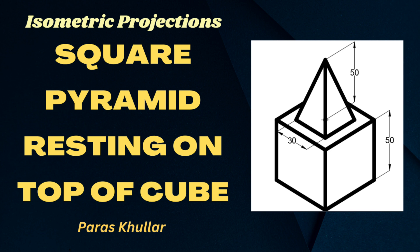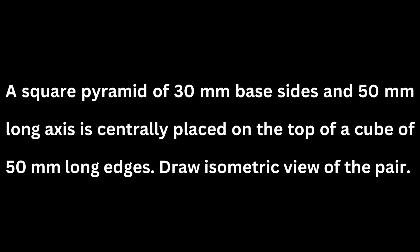Hello students. In this video we will discuss a question of combination of solids in isometric projection. In this question a solid is placed on top of another solid. A square pyramid of 30 mm base sides and 50 mm long axis is centrally placed on the top of a cube of 50 mm long edges. Draw isometric view of the pair.